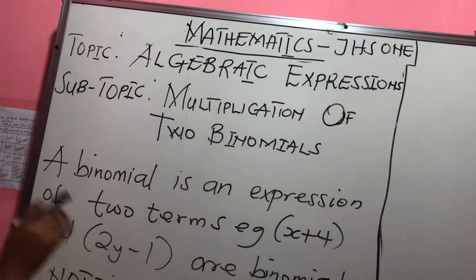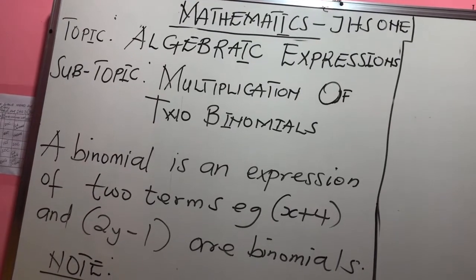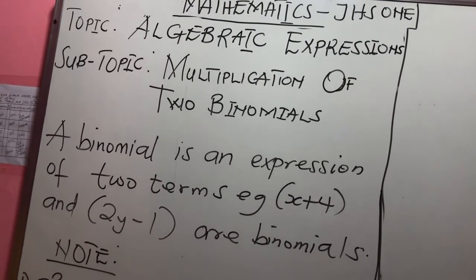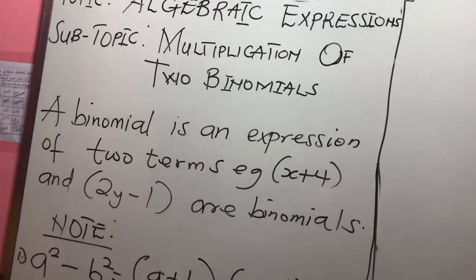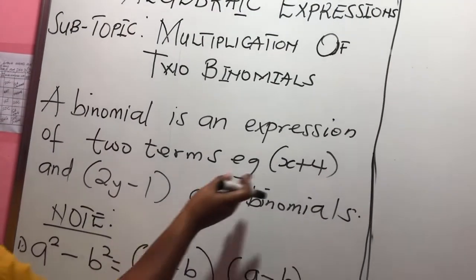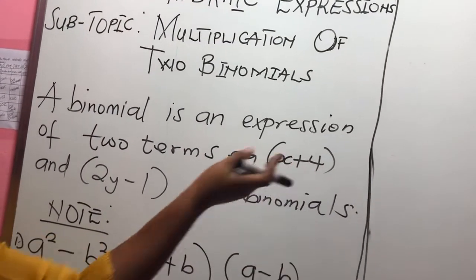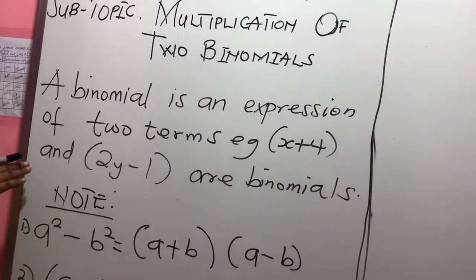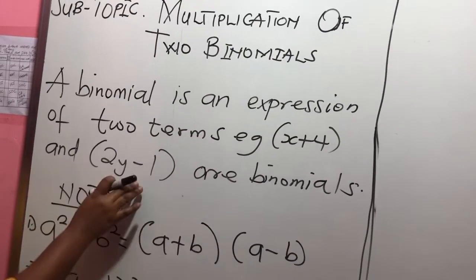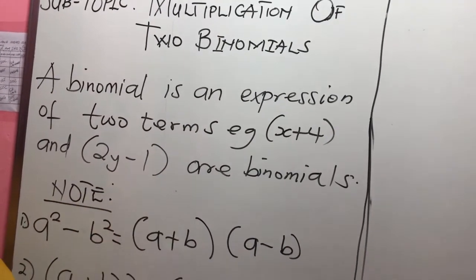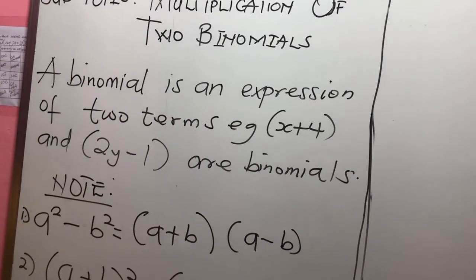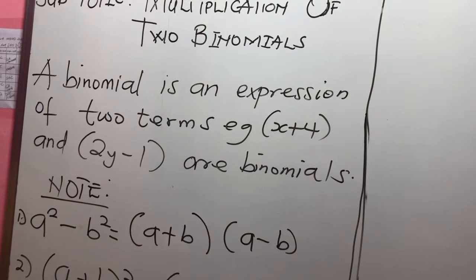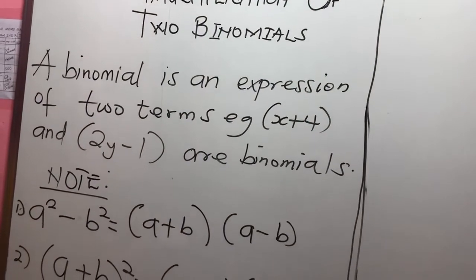A binomial is an expression of two terms. For example, x plus 4 in a bracket and 2y minus 1 — these are what we refer to as binomials.